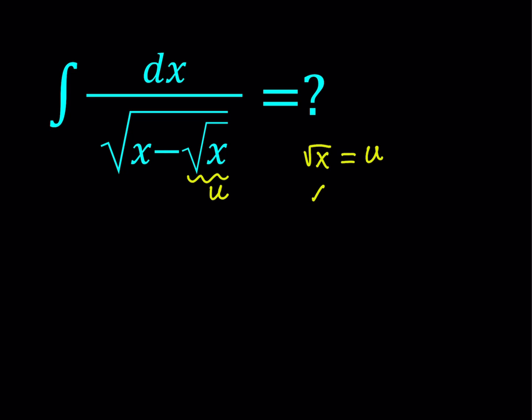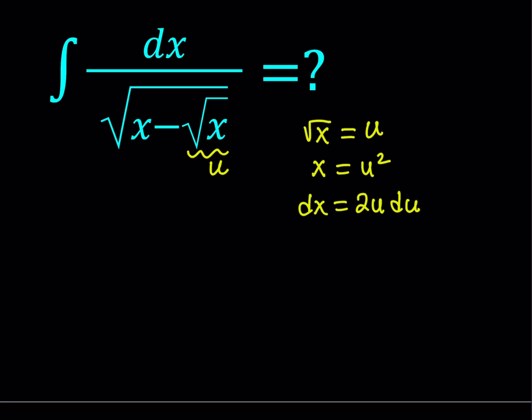If I square both sides I get x is equal to u squared. Whenever you call something u you're supposed to evaluate du, so you want to know what x is in terms of u. If you differentiate both sides — take the differential of both sides — then you're going to be getting dx is equal to 2u du. So that's my dx.